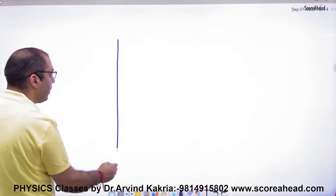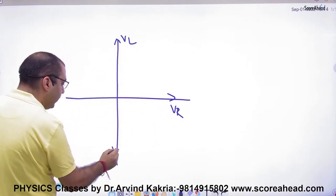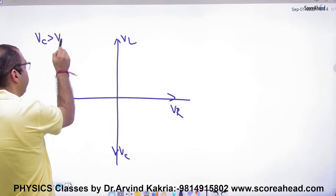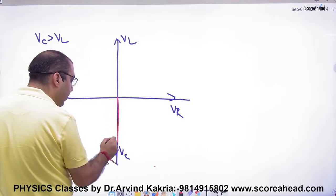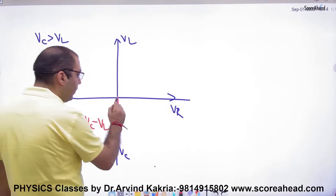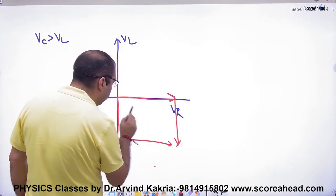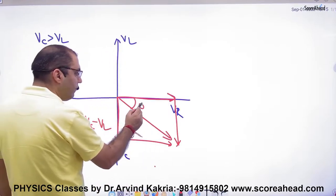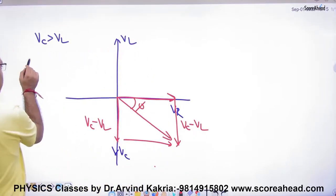Here we have VR, VL, and VC. If VC is greater than VL, then the net vector sum will be VC minus VL. So if I draw this diagram, the resultant — the net EMF — will involve VC minus VL. What will be the value of φ?